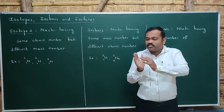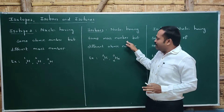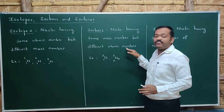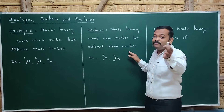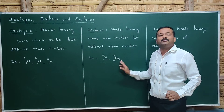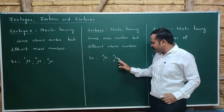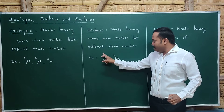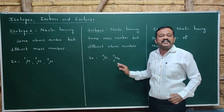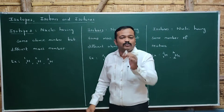Next are isobars. Isobars have the same mass number but different atomic numbers. Whenever there are different atomic numbers, we have different elements. For example, hydrogen-3 and helium-3: H with Z=1, A=3, and He with Z=2, A=3. The mass numbers are the same but the atomic numbers are different. Such nuclei are called isobars.